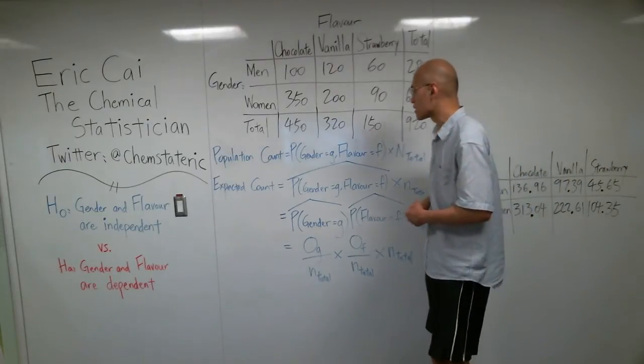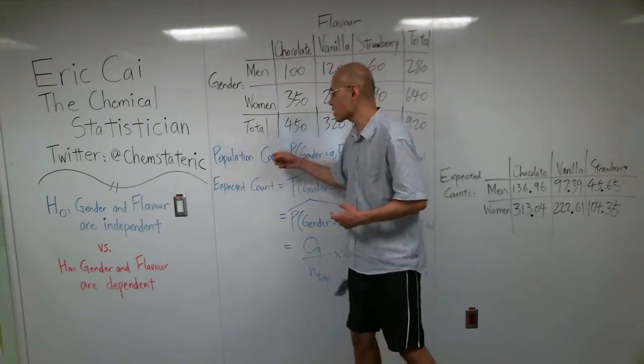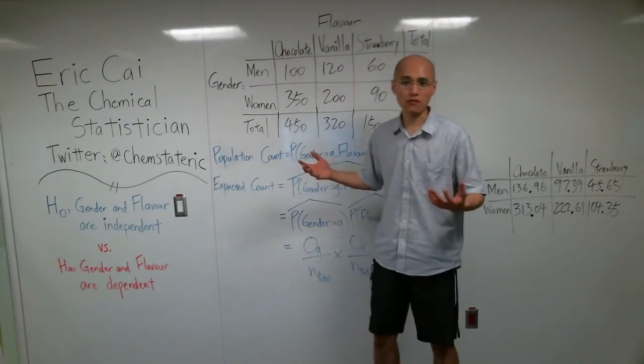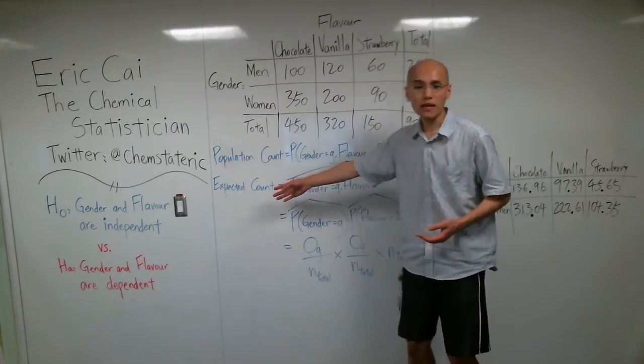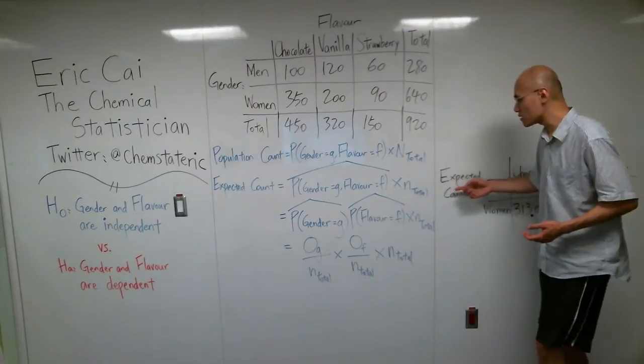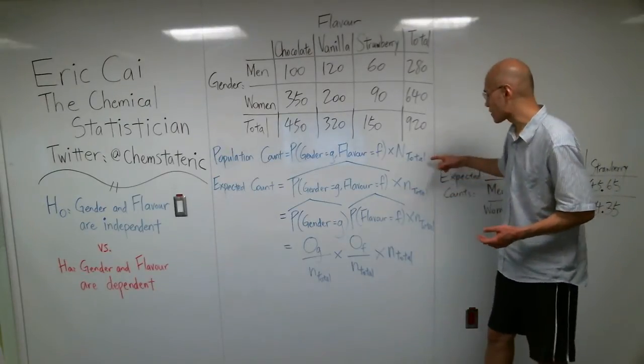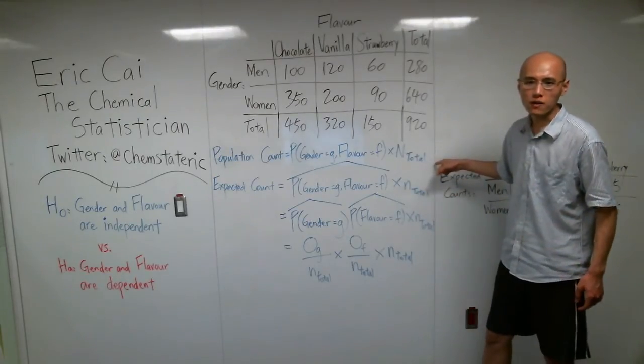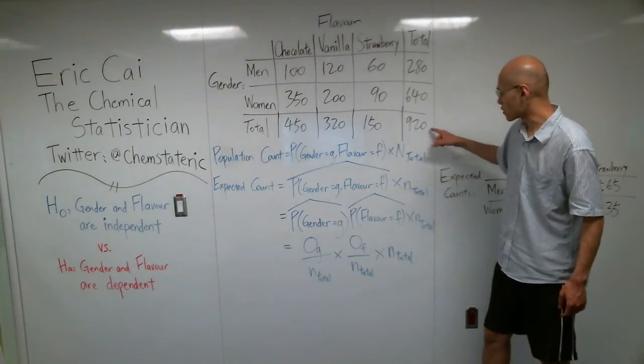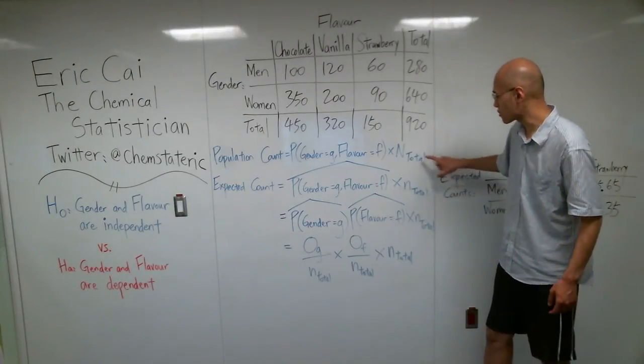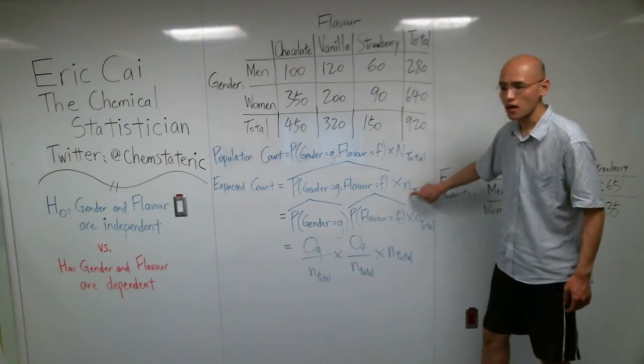So in that case, I can't get the population count because I'm not counting everybody. But I can get the expected count. And the idea is the same. Instead of having all human beings in this grand total, I have my sample total here, 920. So I'm distinguishing them between capital N and lowercase n.